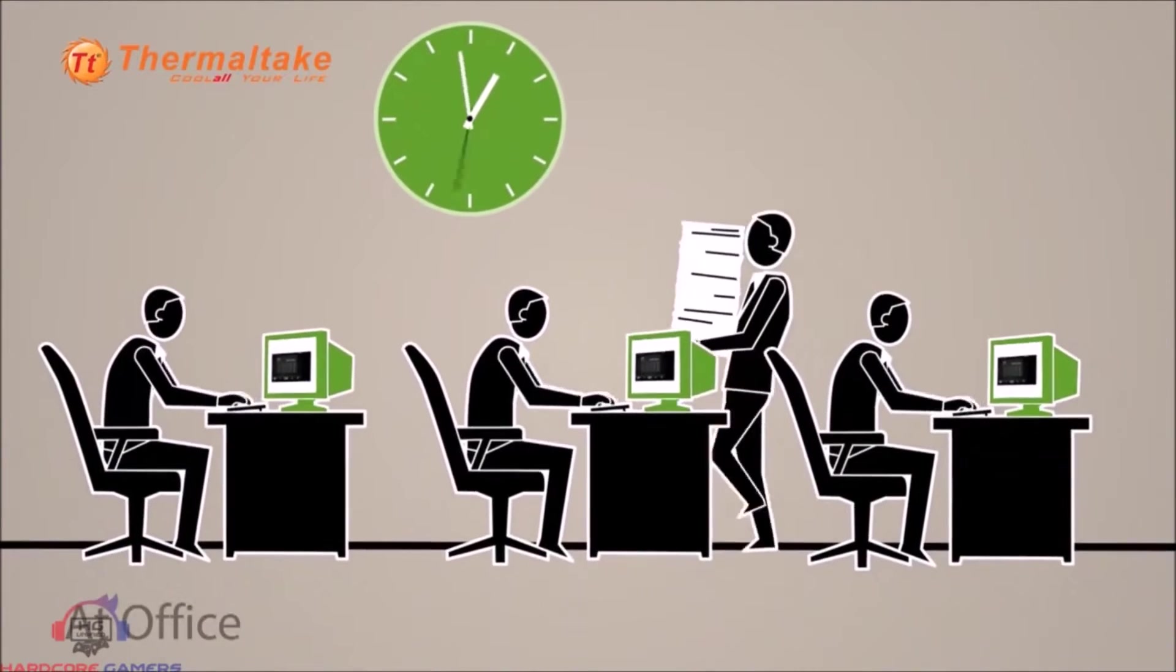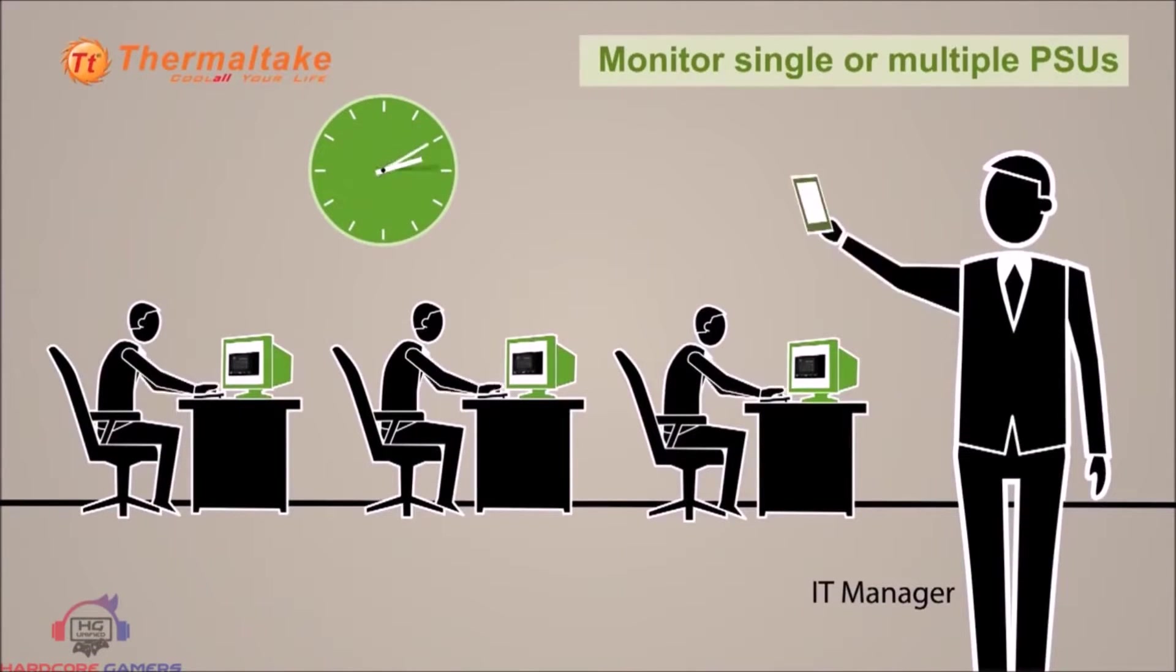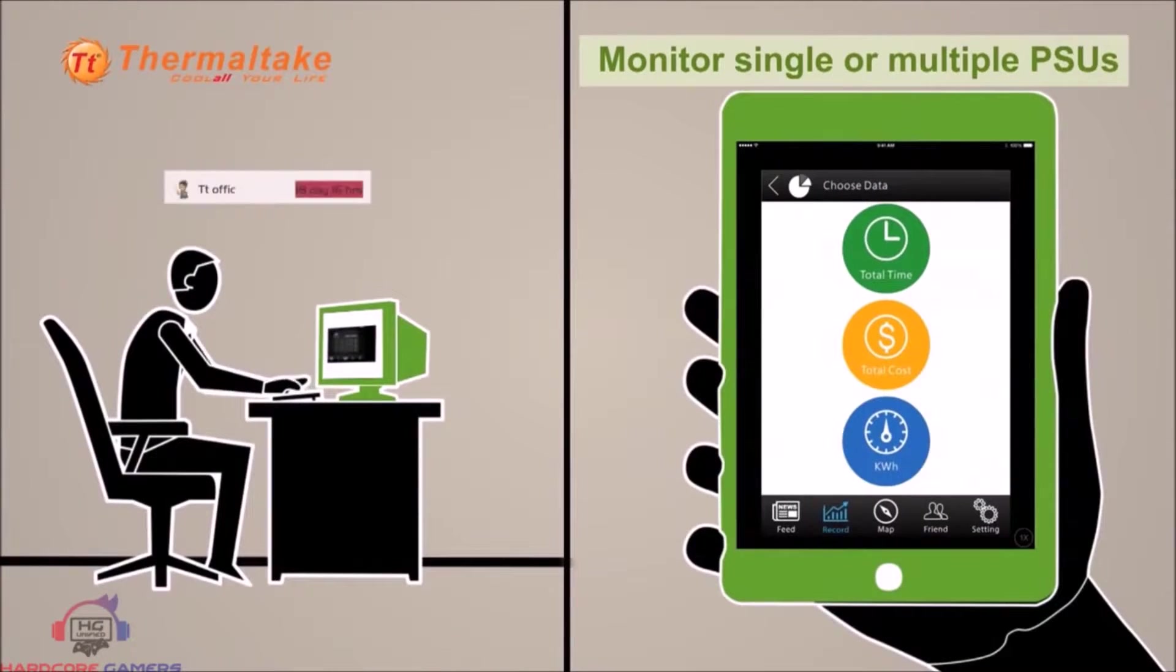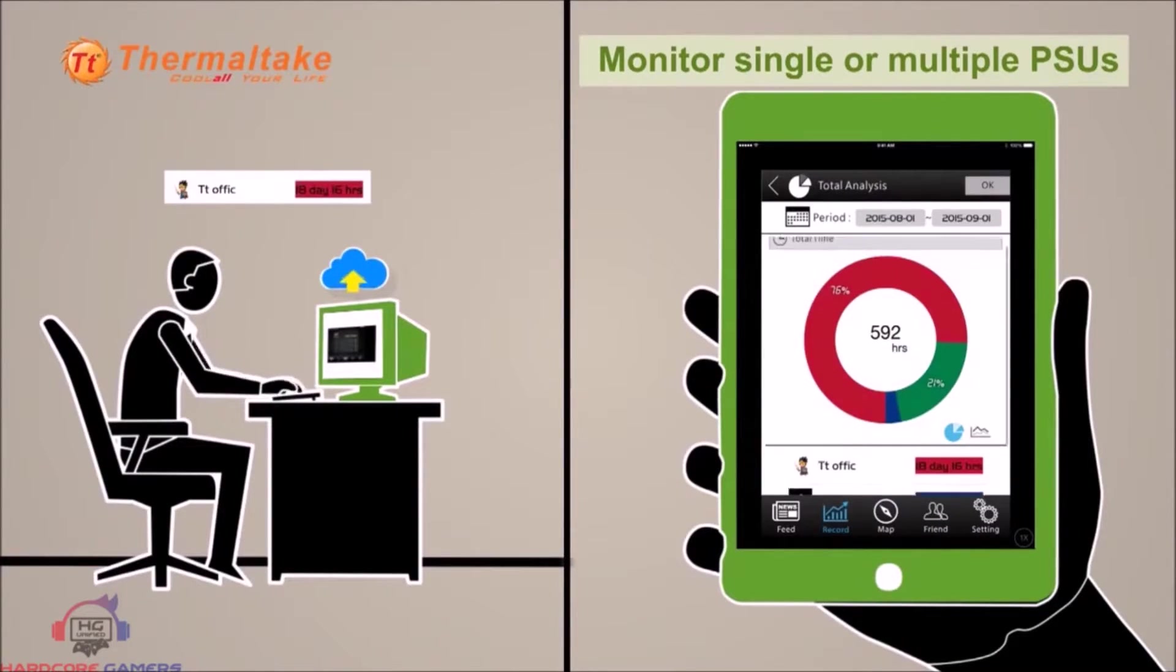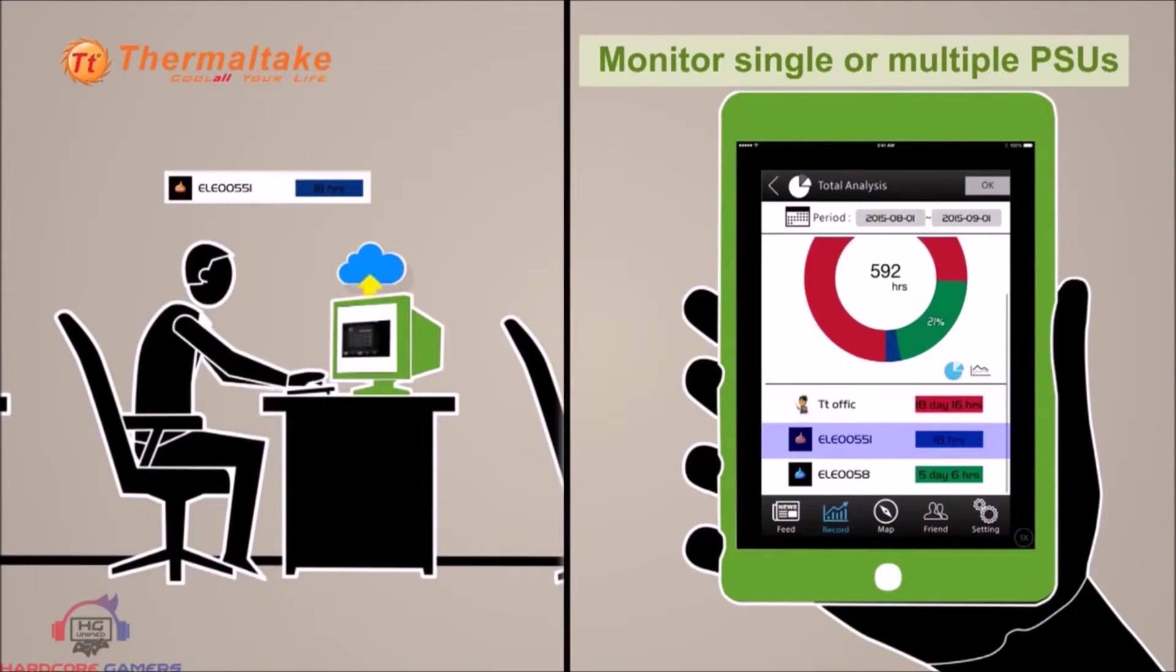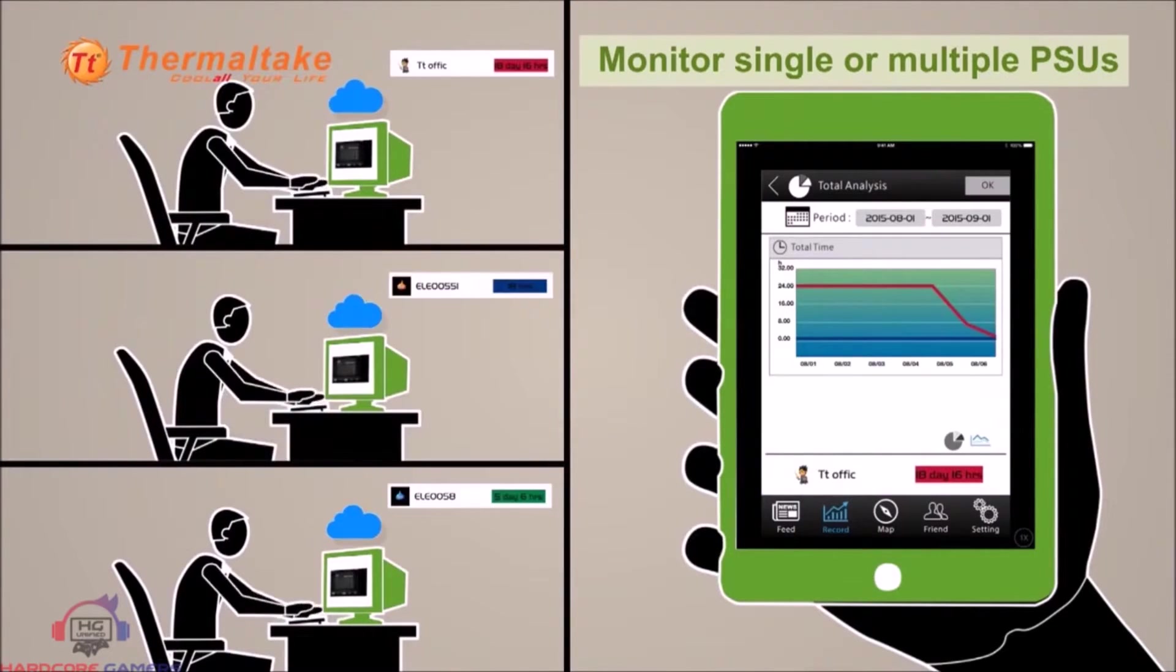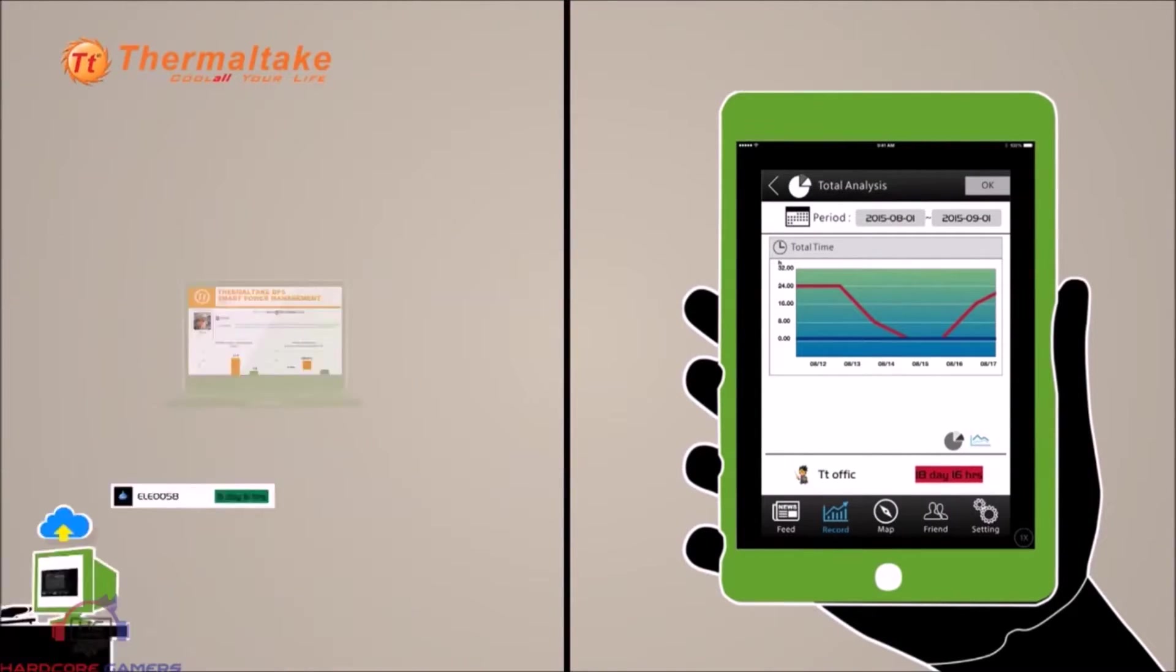A spec which I like to talk about is the power good signal. The power good signal should be around 100 to 500 milliseconds, which is ideal. Then I would like to talk about the power factor correction. This one is mentioned as active PFC, which means it uses a circuit for power factor correction, unlike capacitors, and which is better in quality than the passive ones.